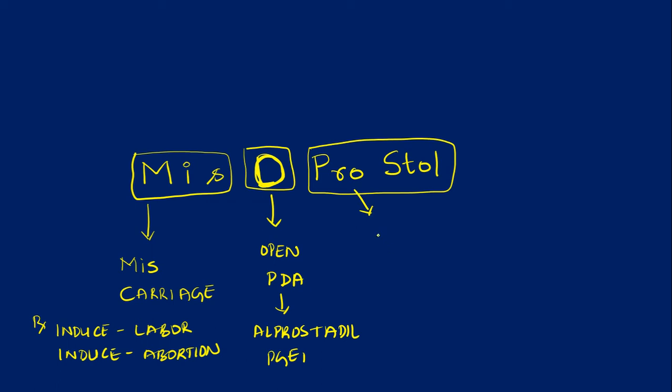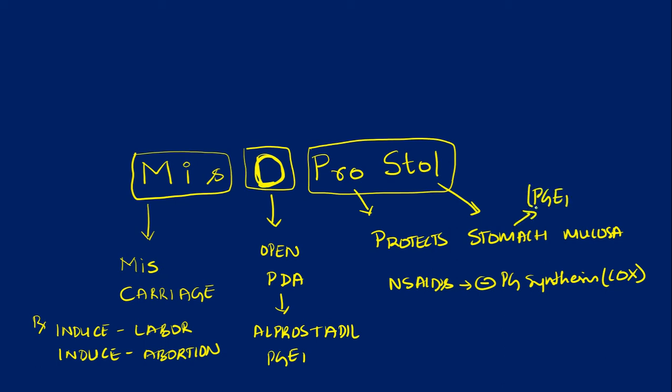We have PROS. PROS stands for protects stomach mucosa against the NSAIDs, non-steroidal anti-inflammatory drug induced ulcer. As you know, NSAIDs inhibit prostaglandin synthesis by inhibiting COX activity. In the stomach we have prostaglandin E1 activity which is a gastroprotective agent. These NSAIDs will be inhibiting this production.